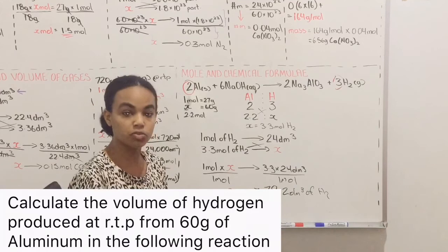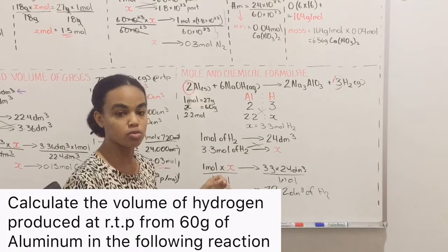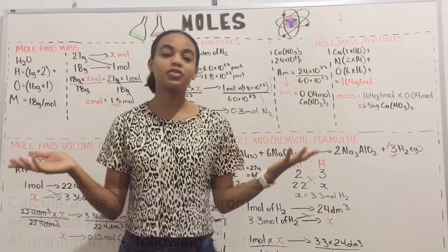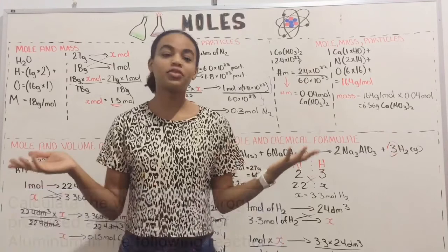So if we use 60 grams of aluminum in the reaction with sodium hydroxide, you would get 79.2 dm³ of hydrogen gas. That ends this video. If you'd like a part 2, just let me know. Leave a comment if you have questions or videos you'd like me to cover, and subscribe to this YouTube channel and share these videos.